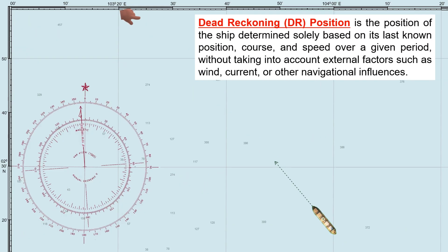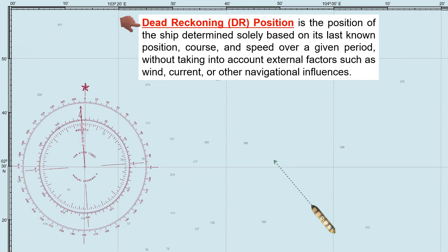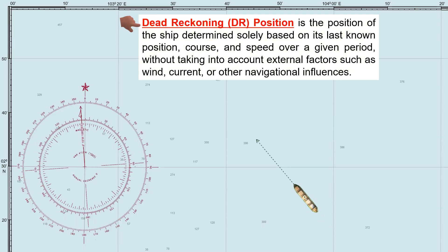Dead reckoning, or DR position, is the position of the ship determined solely based on its last known position, course, and speed over a given period, without taking into account external factors such as wind, current, or other navigational influences.